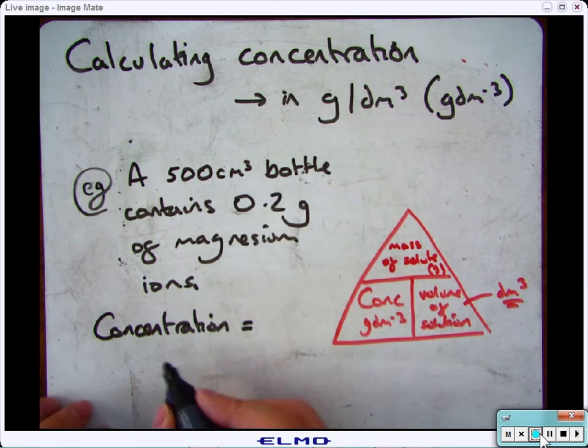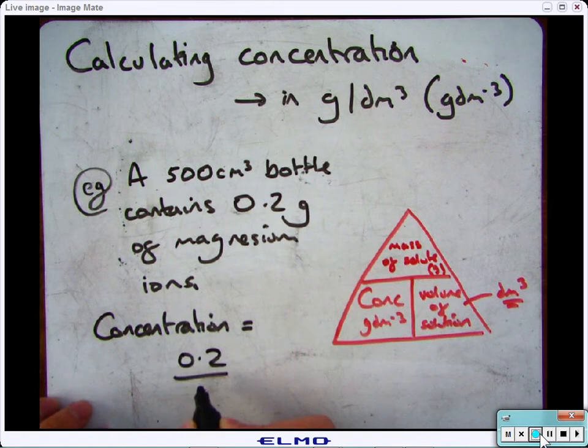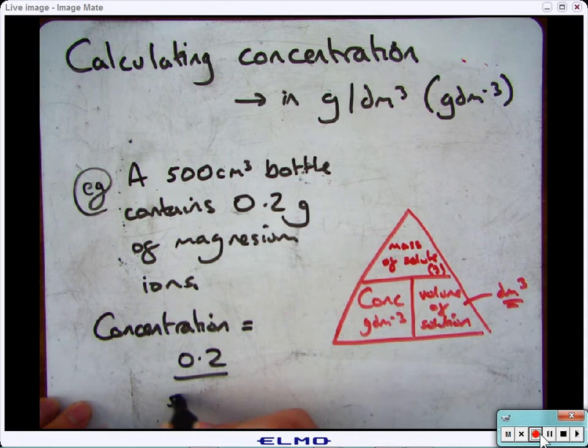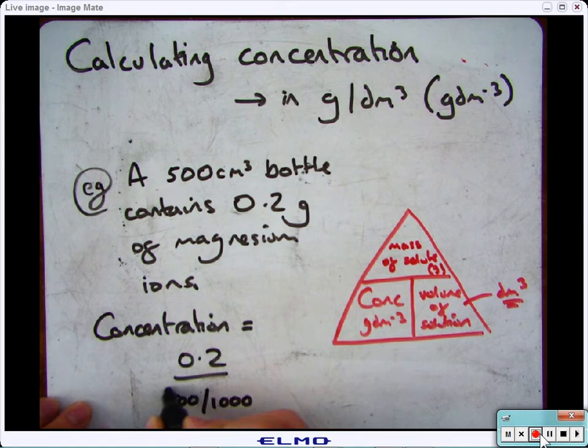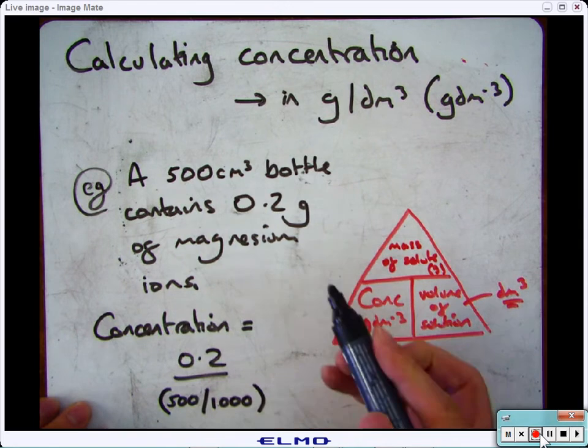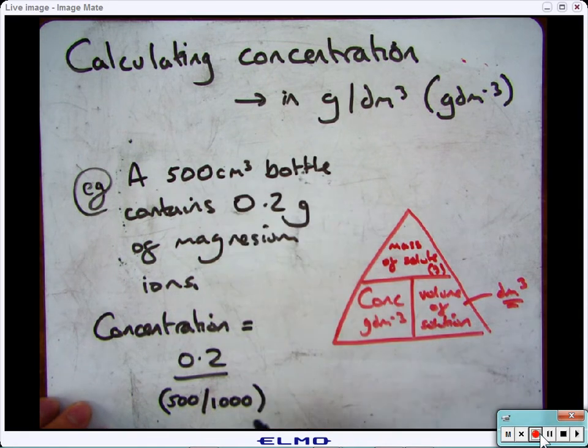So normally you would write 0.2 divided by the volume. But this volume has got to be put into decimetre cubed. So that is 500 divided by 1,000. So you divide by 1,000 if it's in centimetres cubed to get it into decimetres cubed.